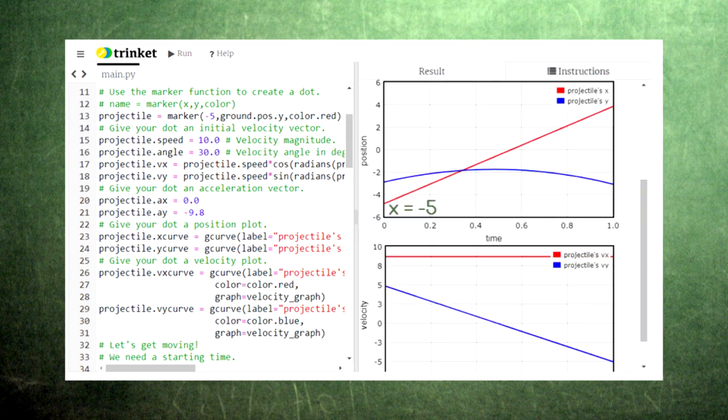To find the range, we see that the projectile starts at x equals negative 5 and ends at x equals positive 4, giving us a total horizontal distance of 9.